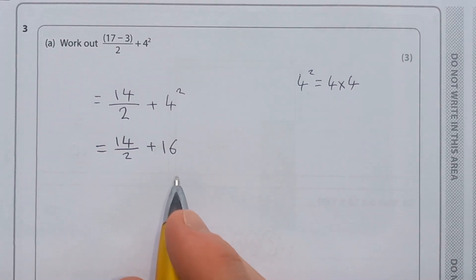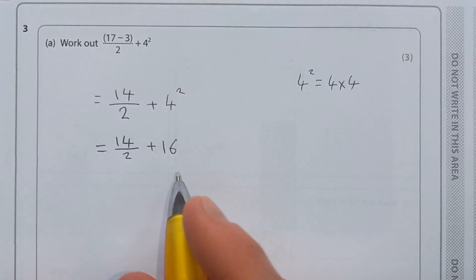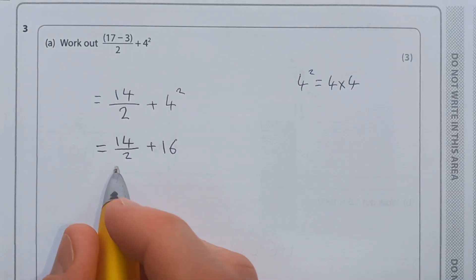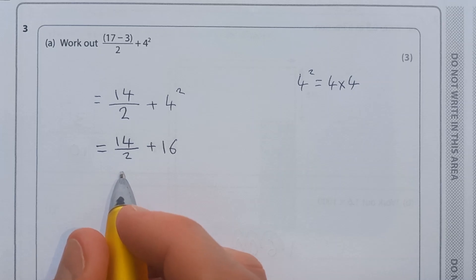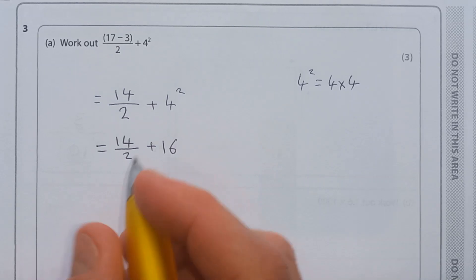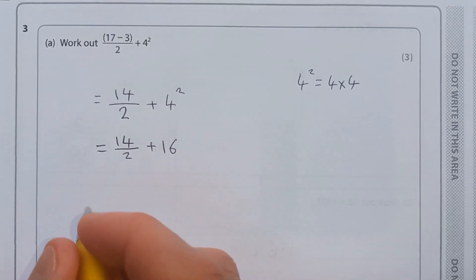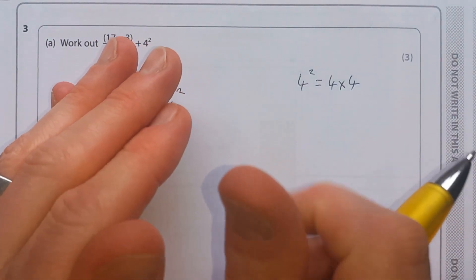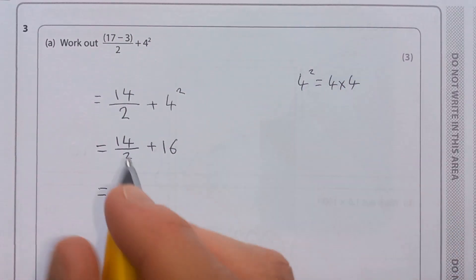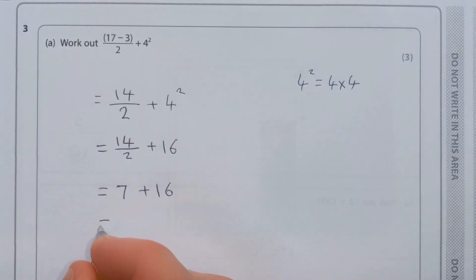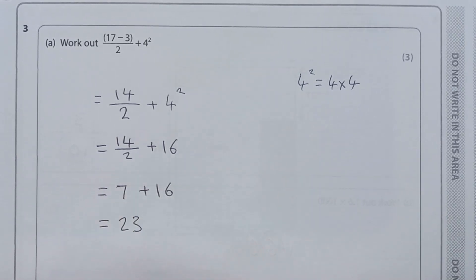Now we've done brackets and indices. Next we have a division and an addition — division comes first in BIDMAS. 14 divided by 2: 2, 4, 6, 8, 10, 12, 14 — that's 7 times. So we've got 7 plus 16. Now we've only got one thing left: 7 plus 16 equals 23.